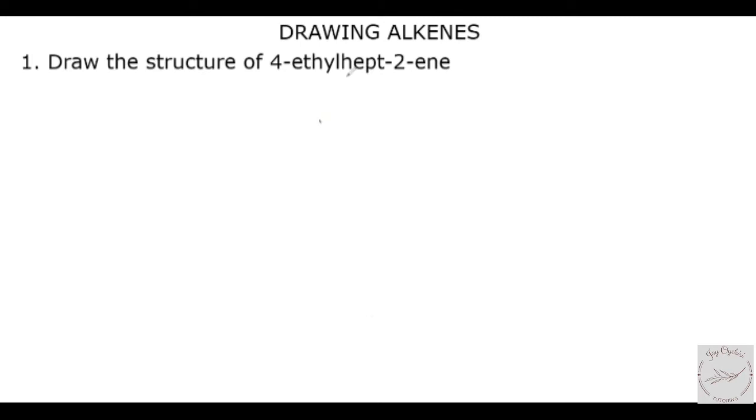The first question says to draw the structure of 4-ethyl-hept-2-ene. The first thing we need to do is look at the root. The root here says hept-2-ene. Hept means that there are 7 carbons in this compound, so we draw out all 7 carbons.